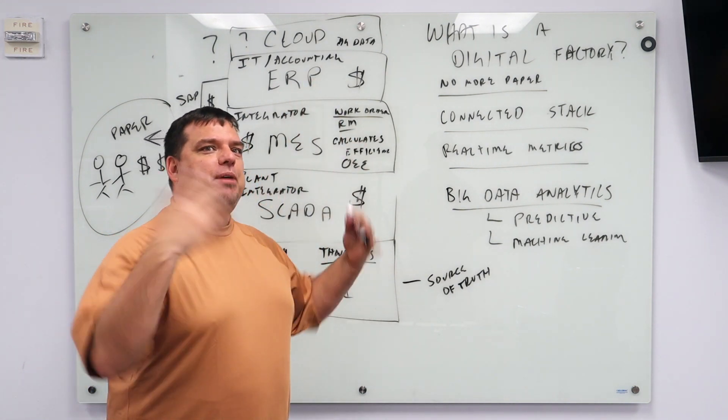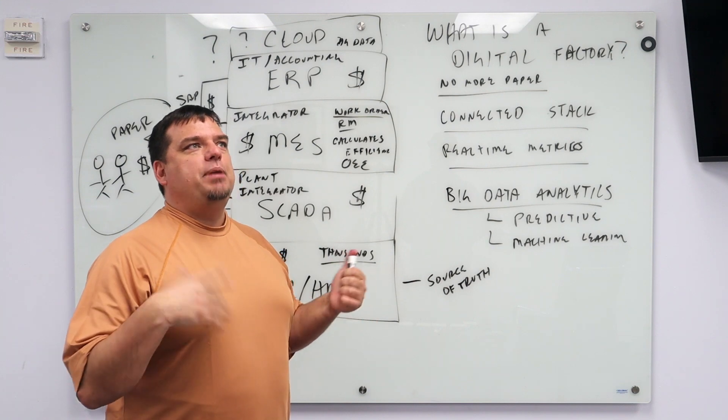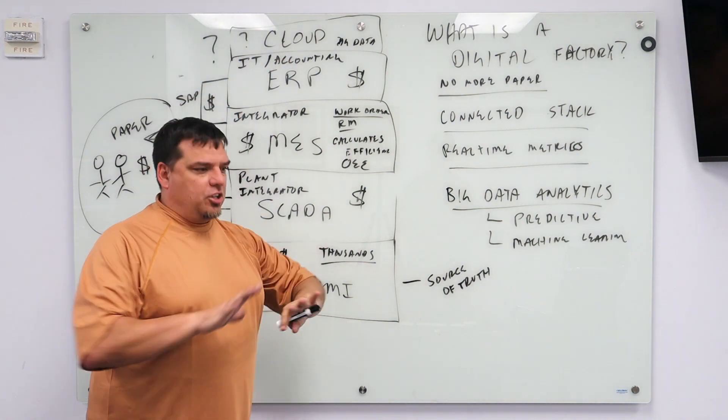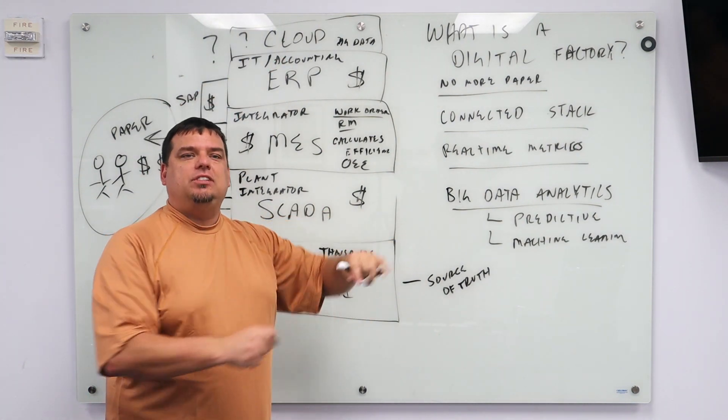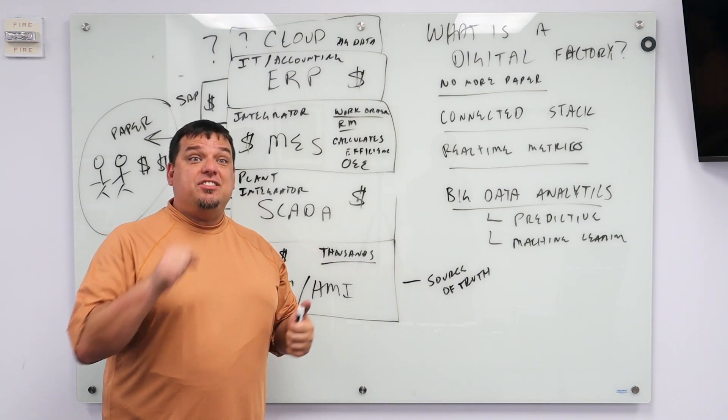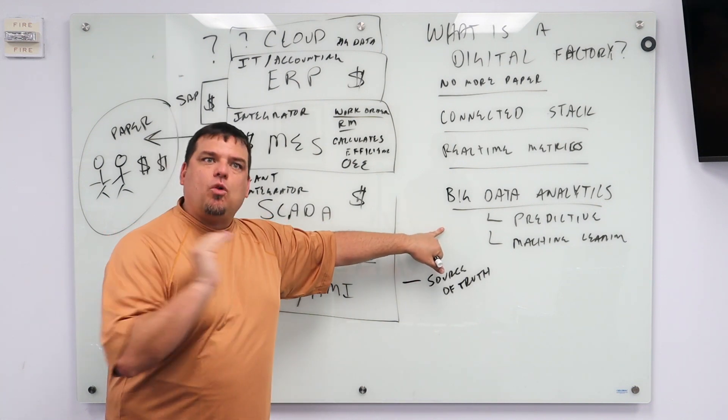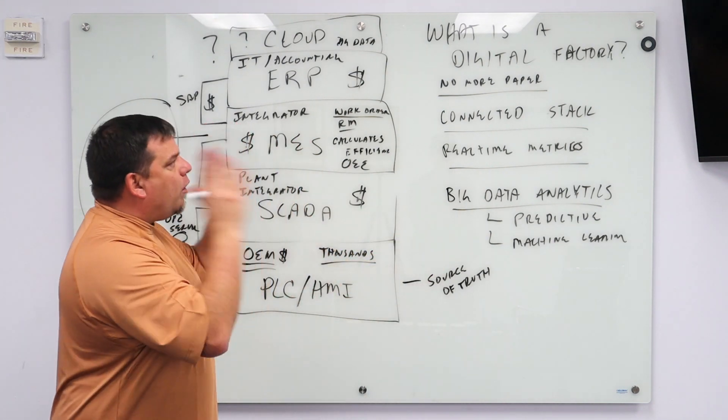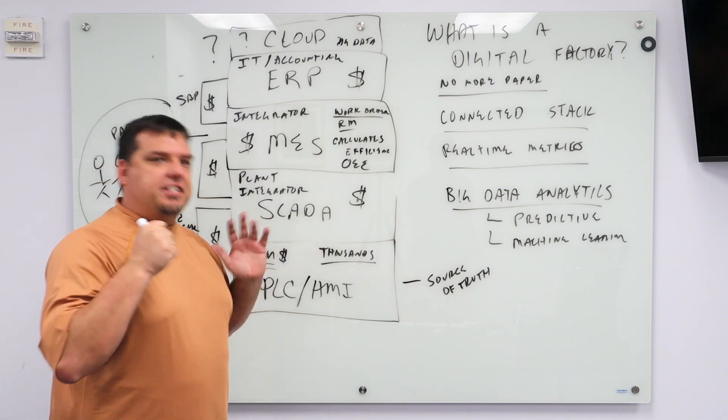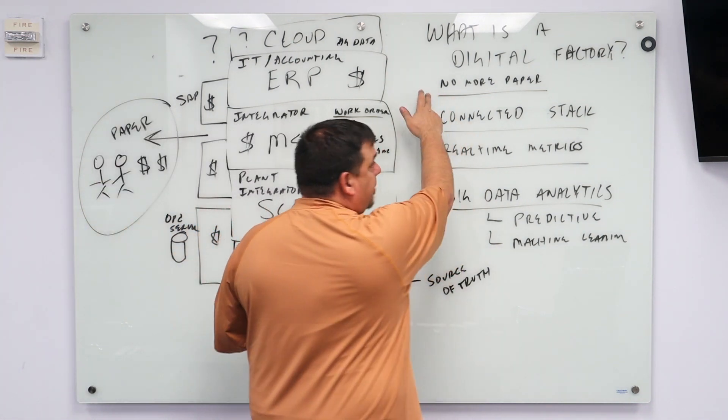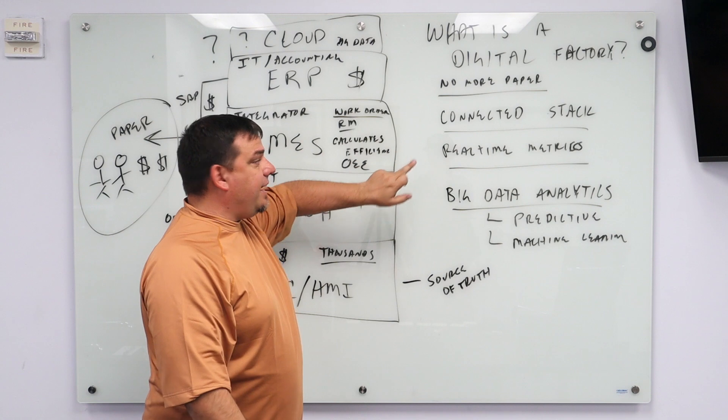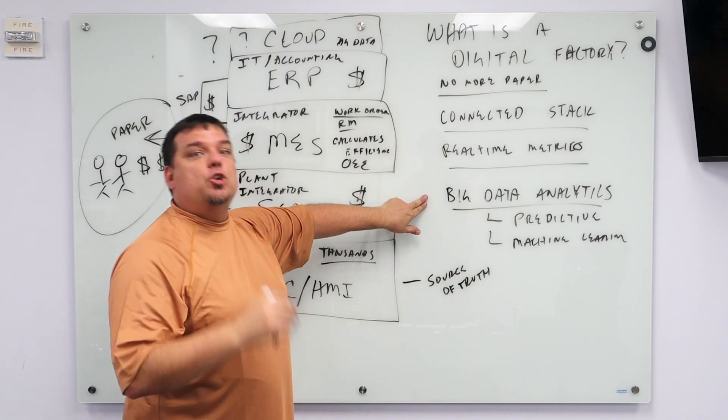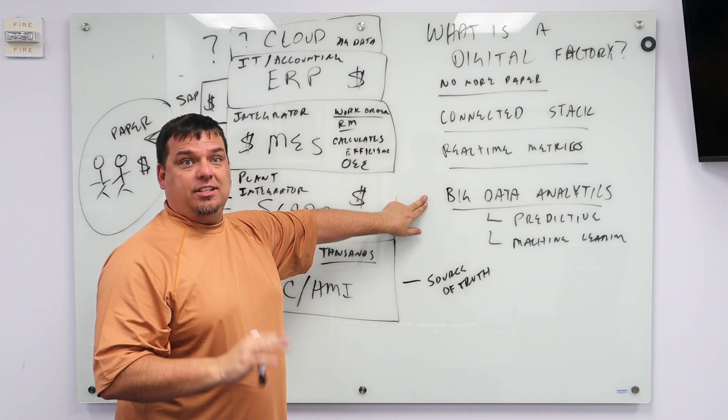Problem is, you can't, there's no big data machine. There's no big data algorithm that analyzes all that yet. What you want to be able to do is have programs that are running in the cloud to go look at our historical data. Look at the information that our operators gave us and predict that we are driving right into something we've already learned could happen. So that's big data analytics. So those are the four fundamental elements of what the digital factory is. The digital factory has no paper. It's completely connected through the stack. You have real-time metrics all the way through the stack from ERP, MES, SCADA, PLC, HMI, and the cloud. And you are doing big data analytics. That is the digital factory.